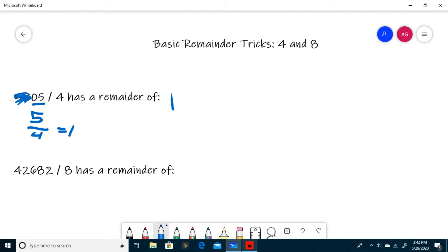The next trick is basically the same, except instead of looking at the last two digits, we look at the last three digits.